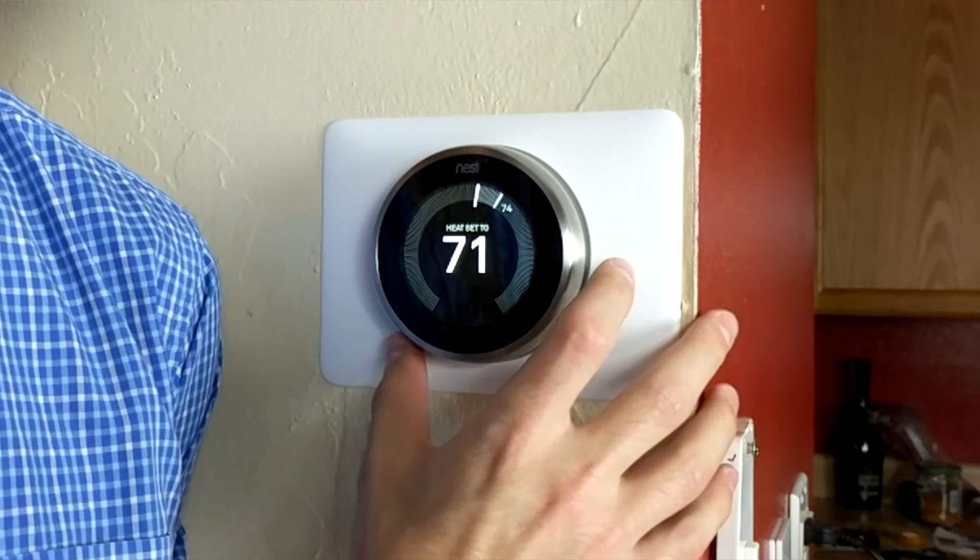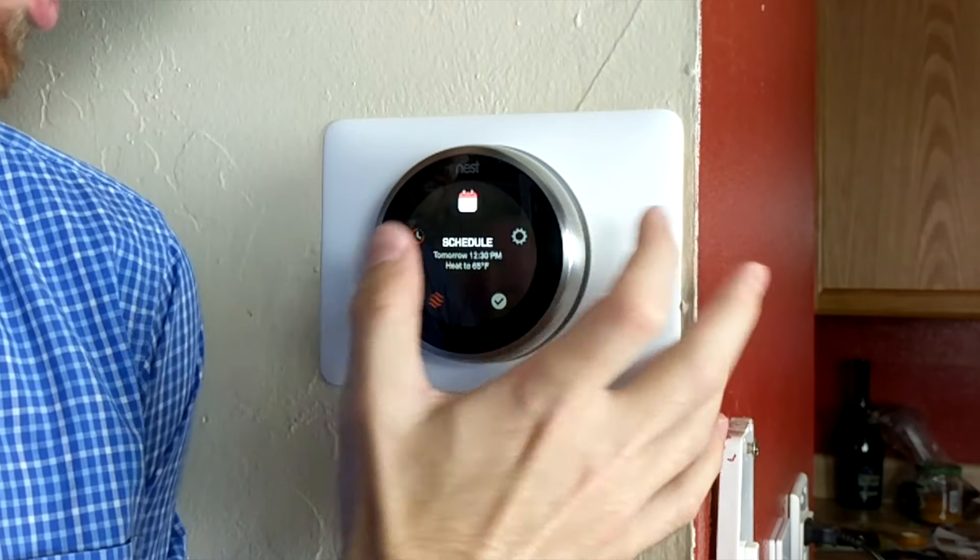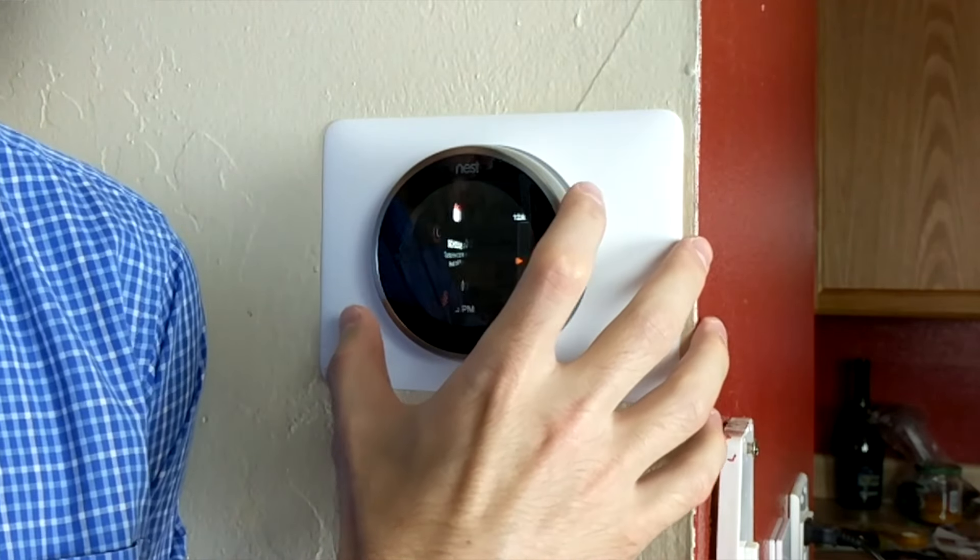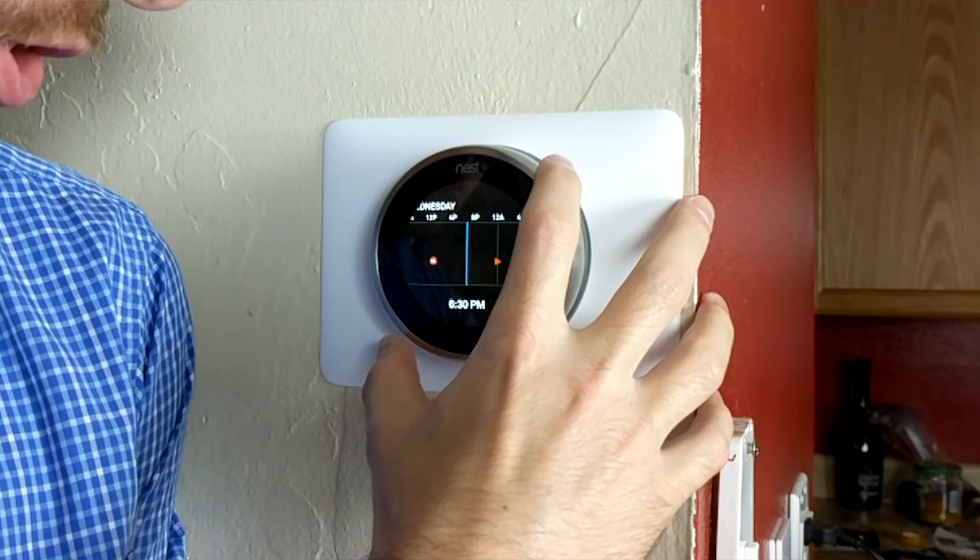Not only can you set the temperature you want, but you can also schedule desired temperatures for different times of day. To do this from the device, press in the ring to access your basic controls and then scroll around to the little calendar icon which is scheduling mode. Press in to select that and then scroll around to the desired time of day that you want to make a change.